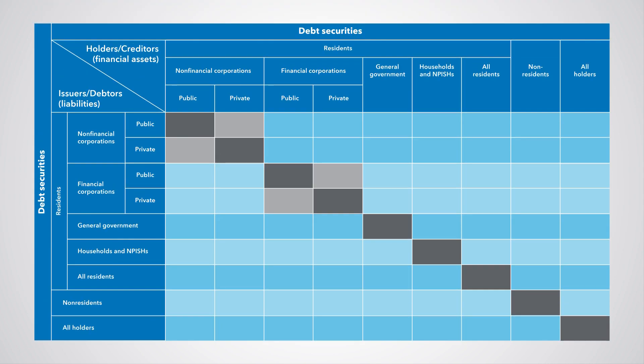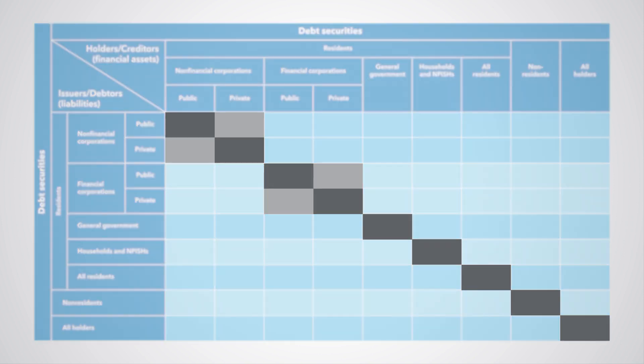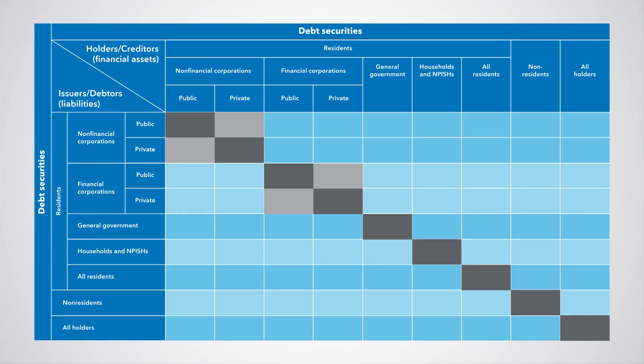A complete from-whom-to-whom framework would look like this. For residents, intra-sectoral stock positions are indicated by the diagonal shaded cells in the table. When we consolidate the statistics, we must remove these intra-sectoral positions. We will say more on that later in the course.